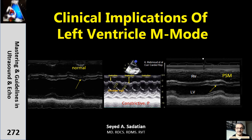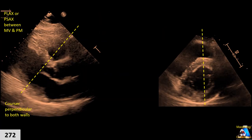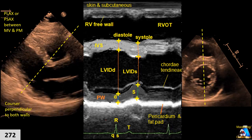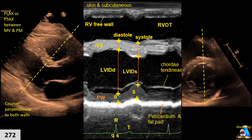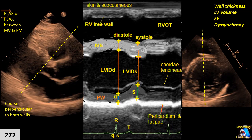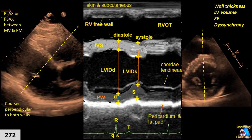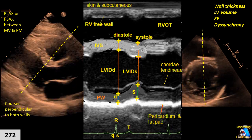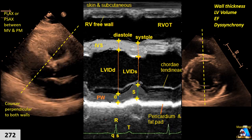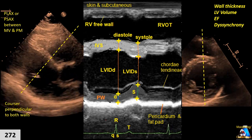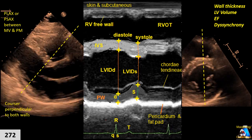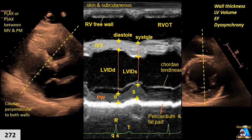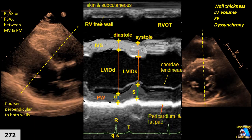Welcome to Mastering and Guide Learning Ultrasound and Echo. Left ventricular M-mode gives us a lot of good information. By correct measurement of wall thickness and LVID during systole and diastole, it can provide clinical information including wall thickness for hypertrophy, left ventricular volume, ejection fraction, and dyssynchrony. I've explained this in two or three other lectures in detail. In this lecture, I focus on other clinical implications of LV M-mode.